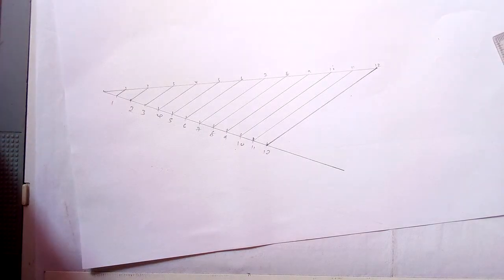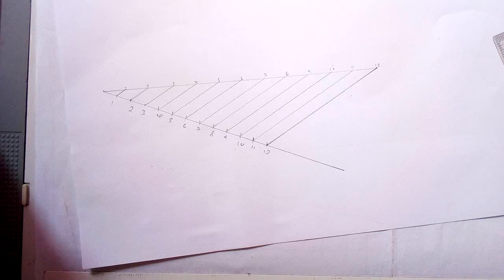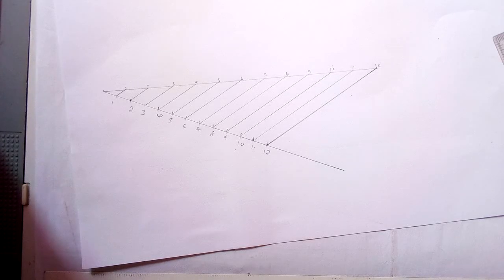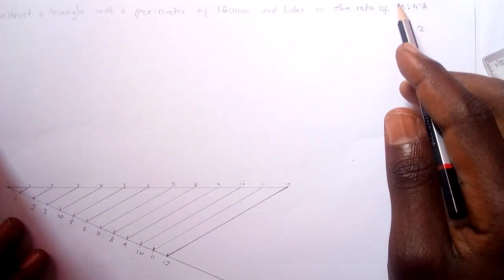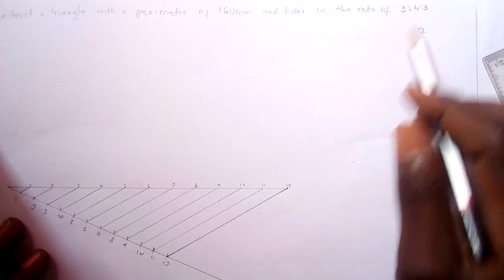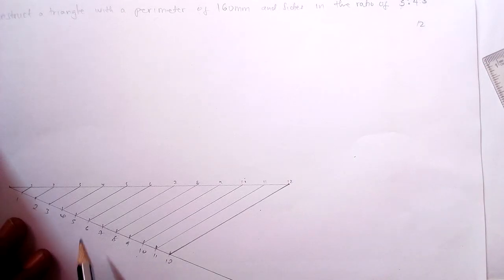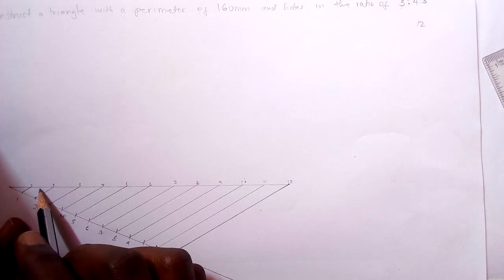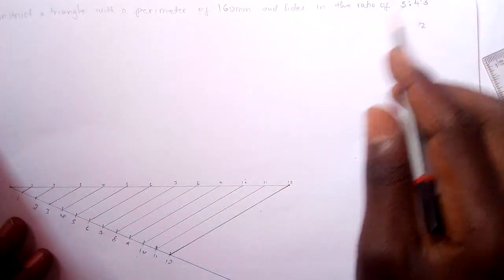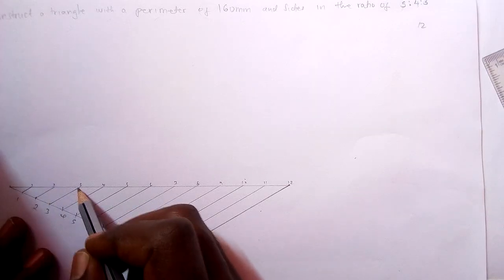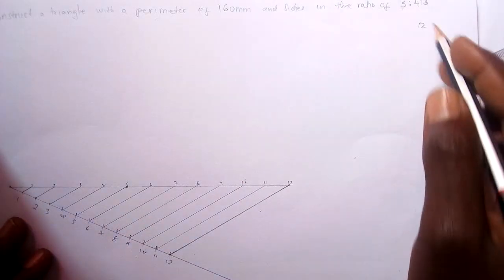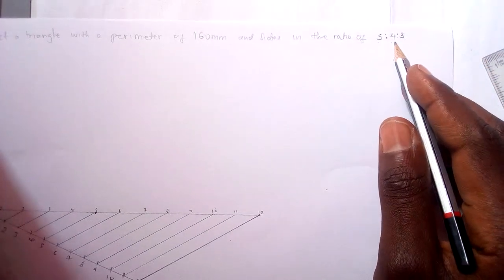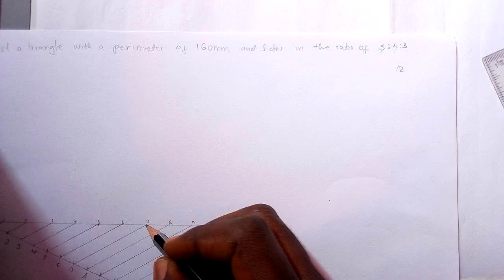You have already divided your line into 12 equal parts. Now we are going to draw our triangle. We are told to divide into ratios. The side ratios must be 5:4:3. Now we are going to count the first 5 parts, which will be 1, 2, 3, 4, 5. And mark the point. Ratio 4, so we are counting 4: 1, 2, 3, 4.